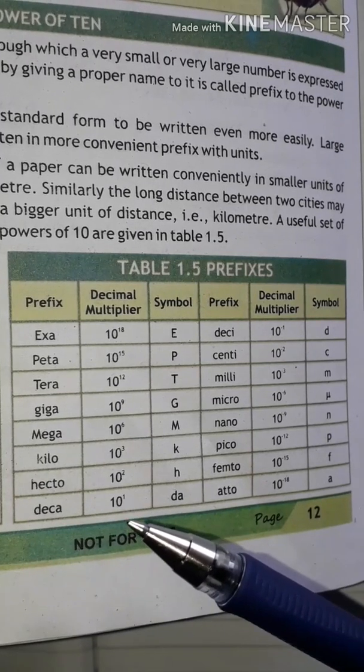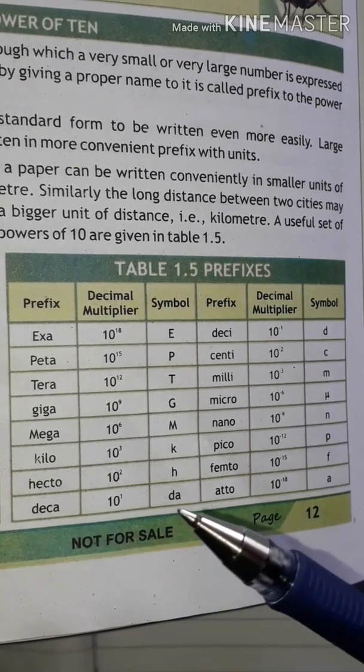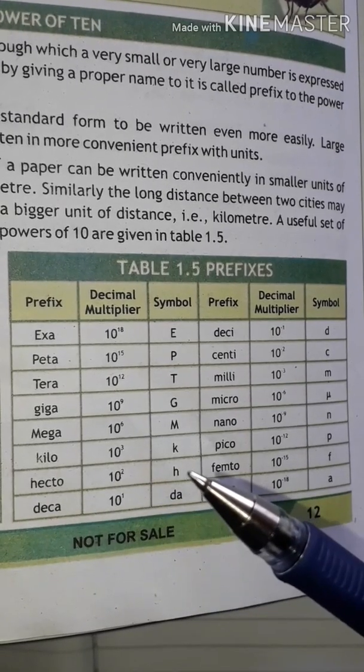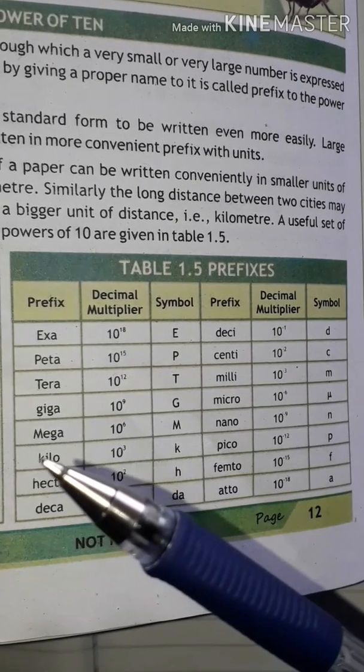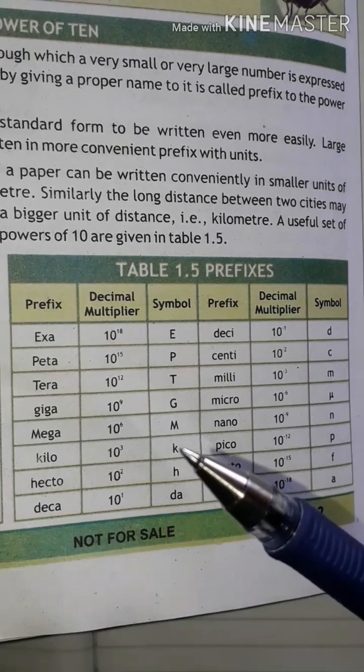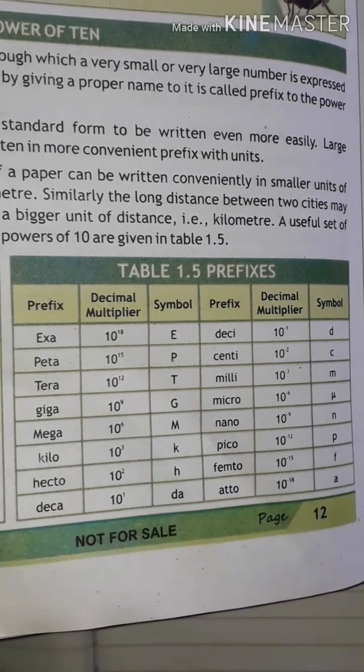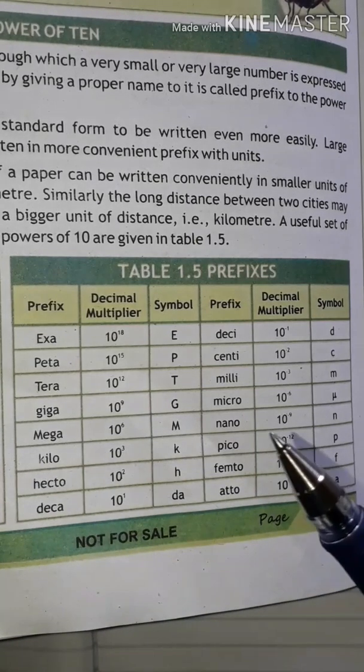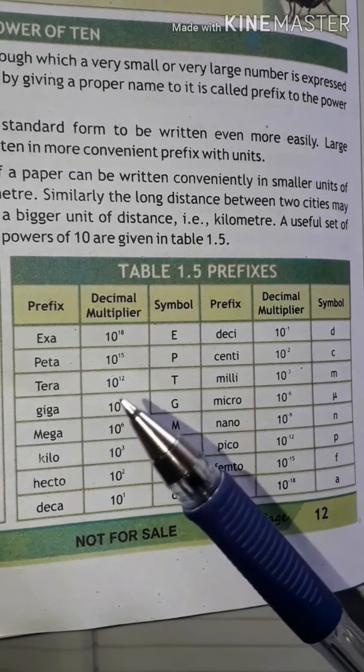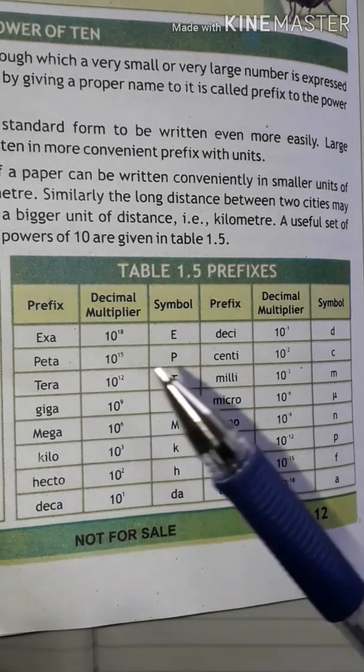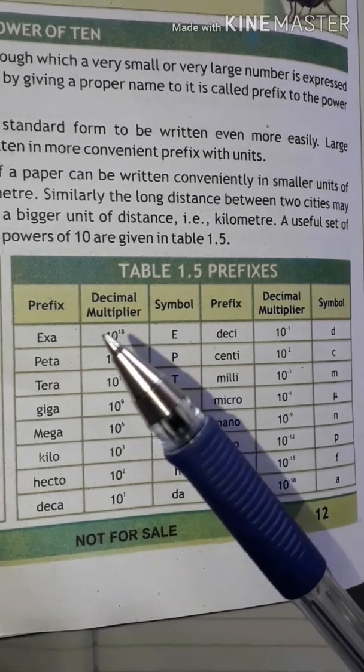10 power one is deca with symbol d. 10 power two is hecto with symbol h. 10 power three is kilo with symbol k. 10 power six is mega with symbol M. 10 power nine is giga with symbol G. 10 power twelve is tera with symbol T. 10 power fifteen is peta with symbol P. And 10 power eighteen is exa with symbol E.